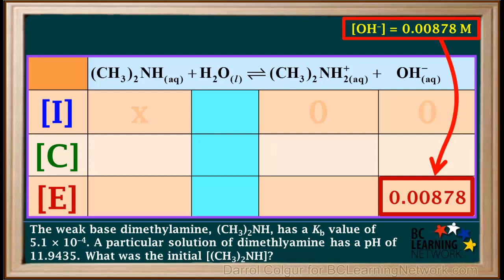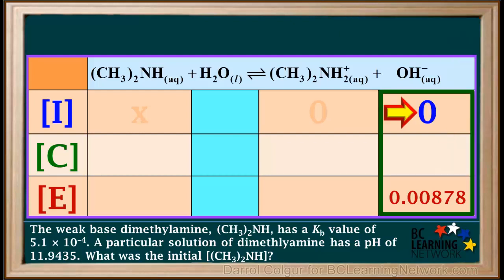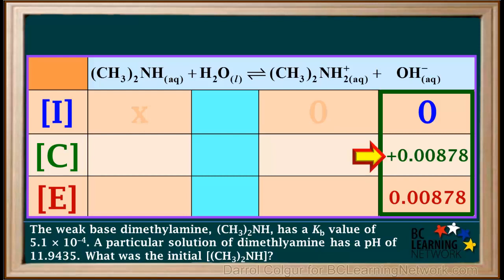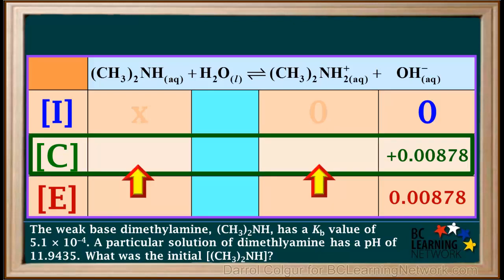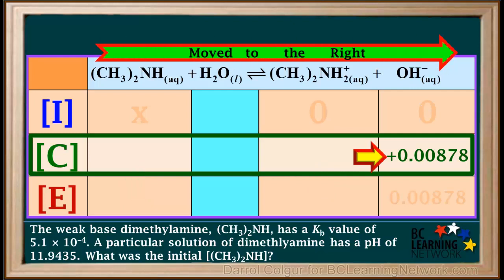We know the equilibrium concentration of OH⁻ is 0.00878 molar, so we'll add it down here in the equilibrium concentration row. The hydroxide ion concentration started out as zero and ended up as 0.00878 molar. Therefore, as the reaction went from its initial state to an equilibrium state, the concentration of OH⁻ increased by 0.00878 molar. We can use this, along with the coefficients in the equation, to find the changes in the concentrations of the other two species. Because the concentration of the product OH⁻ increased, this means the reaction moved to the right as it approached equilibrium.